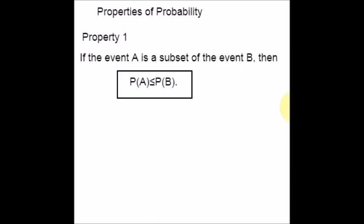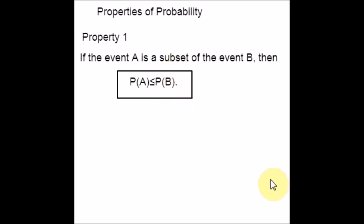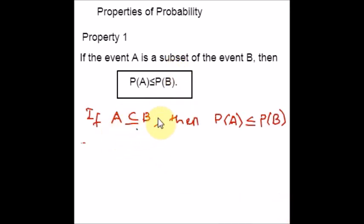Property number 1 statement: if event A is a subset of event B, then the probability of A is less than or equal to the probability of B. In symbolic form: if A ⊆ B, then P(A) ≤ P(B). Now let us see the proof.